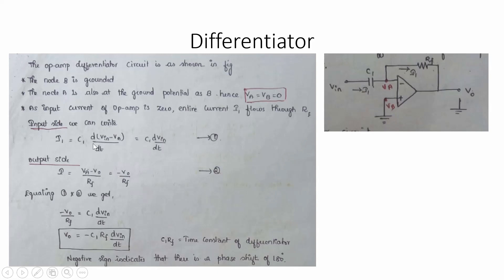Finding current through the input side: with a capacitor on the input, I = C × dV/dt, where dV is the potential difference (Vin − Va)/dt. Since Va = 0, I = C1 × dVin/dt — equation 1. For the feedback resistance Rf, by Ohm's law: I = (Va − Vo) / Rf = −Vo / Rf — equation 2.